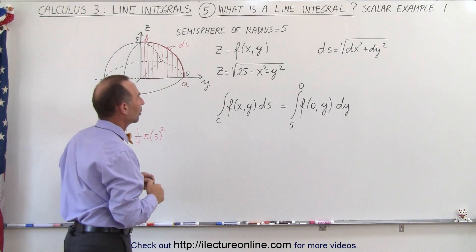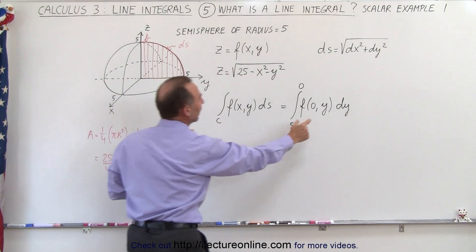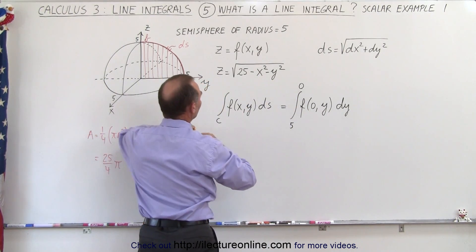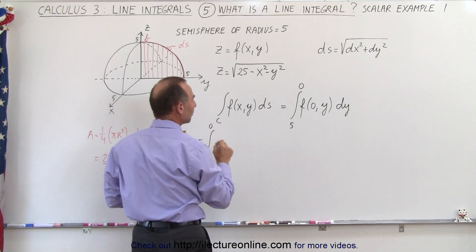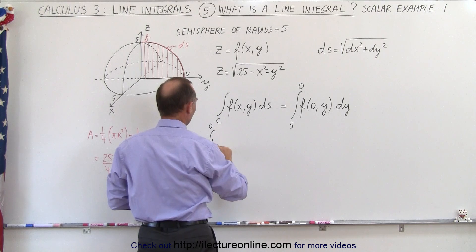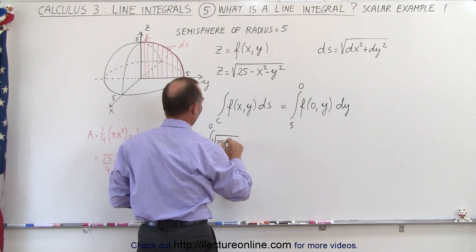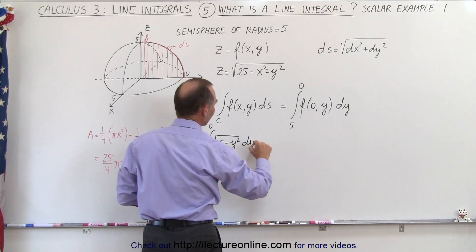So let's go ahead and now plug that function in with x being equal to 0. So this becomes equal to the integral from 5 to 0 of the function, which is the square root of 25, which is 5 squared minus y squared times dy.